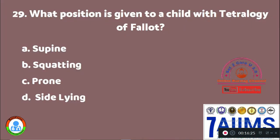Question 29: What position is given to a child with tetralogy of Fallot? Option A: supine. Option B: squatting. Option C: prone. Option D: side lying. The squatting position is normally given to a child with tetralogy of Fallot so that breathing difficulty is decreased.